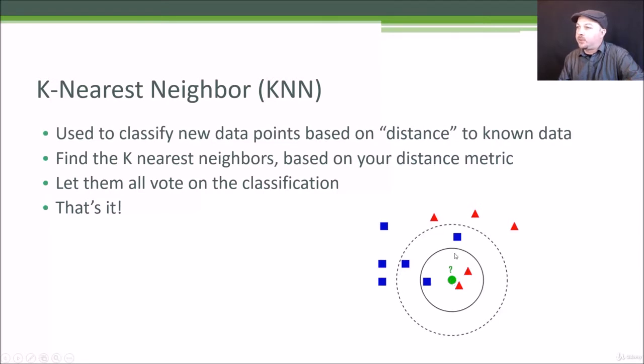So you can see if I take the three nearest neighbors, K is three, I have two drama movies and one science fiction movie and I would then let them all vote and we would choose a classification of drama for this new point based on those three nearest neighbors.